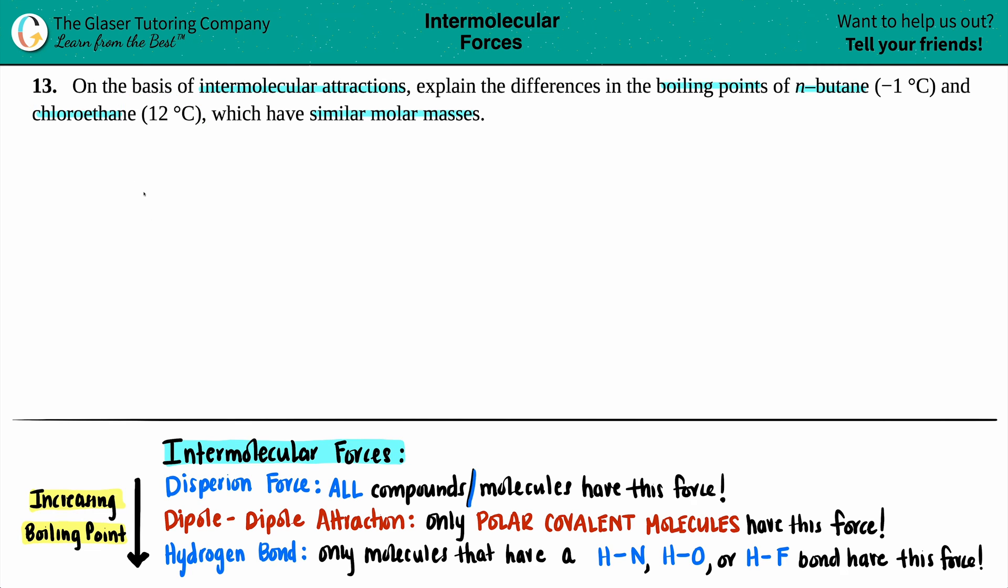The easiest way to go about this is to draw out what n-butane is and what chloroethane is. So I'm just going to write this out: n-butane and then chloroethane. Now, n-butane, the N just represents like a long chain, so we're going to keep the butane in the long chain. There's not going to be any kinks. Butane has four carbons and 10 hydrogens.